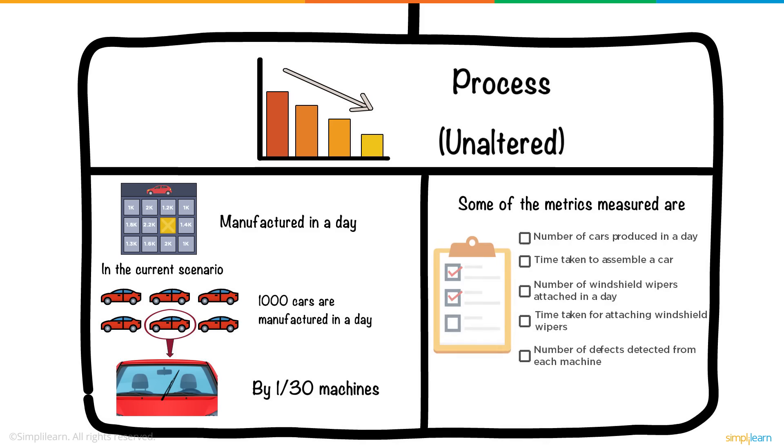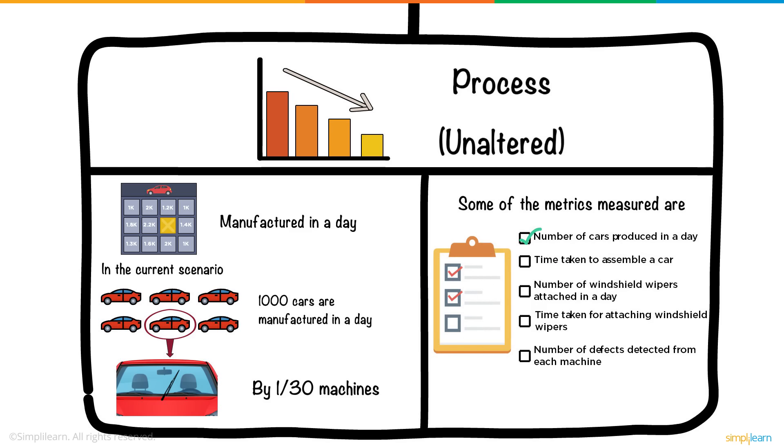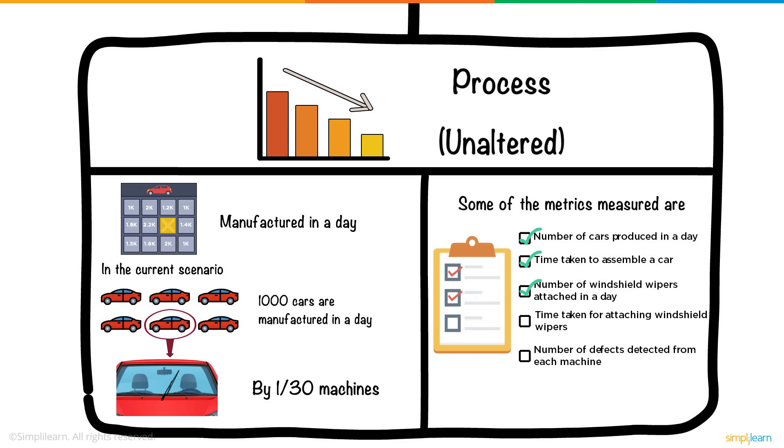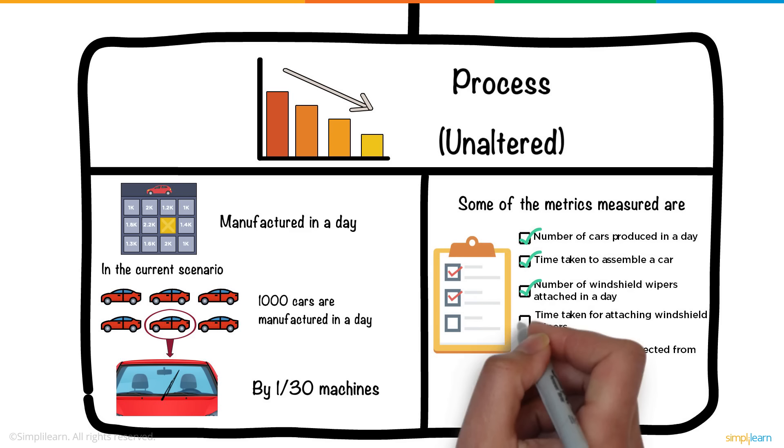Some of the metrics measured are how many cars are produced in a day, time taken to assemble a car, how many windshield wipers were attached in a day, time that takes them to do so, defects detected from each machine on assembly completion, and so on.